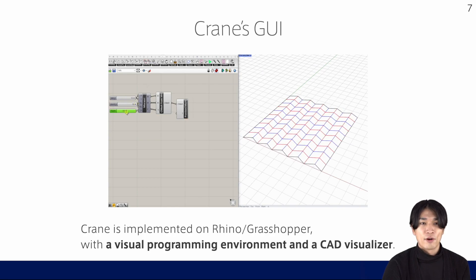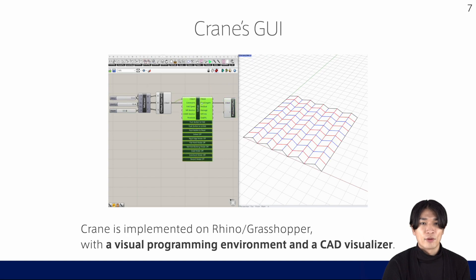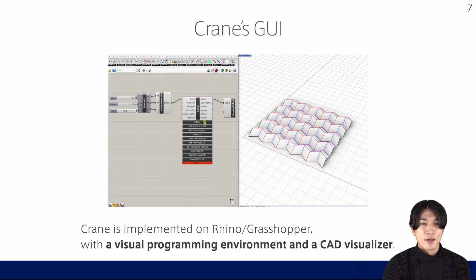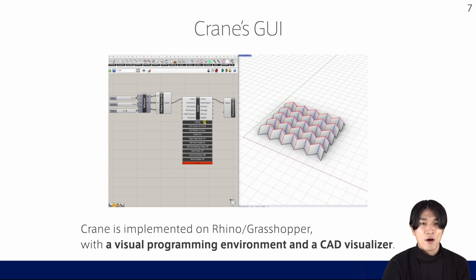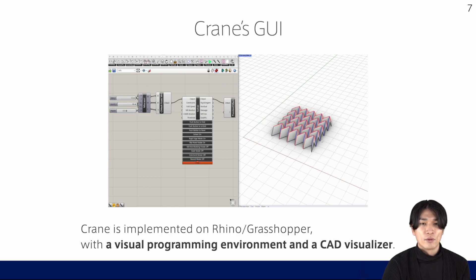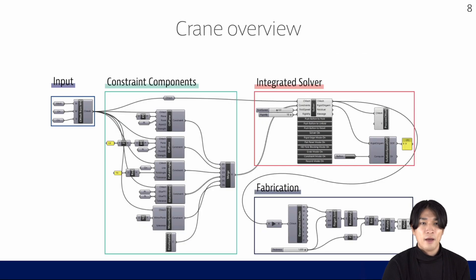On the left, there is a visual programming environment, and there is a visualizer on the right. Now, I'm going to overview the design pipeline with Crane. This is a typical design pipeline.